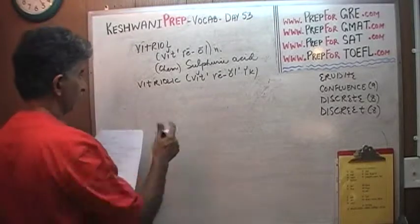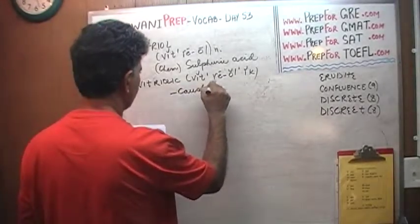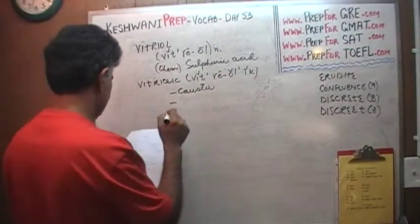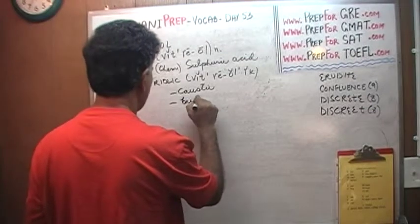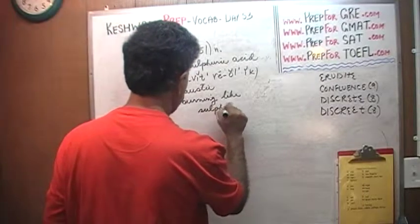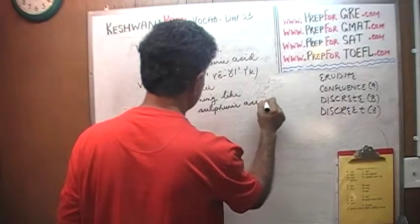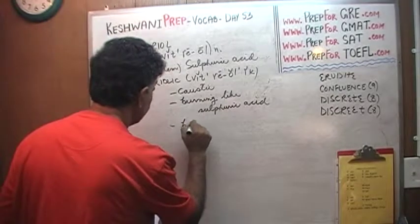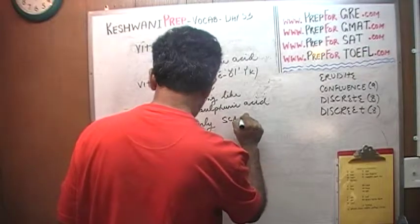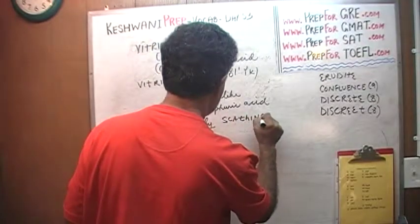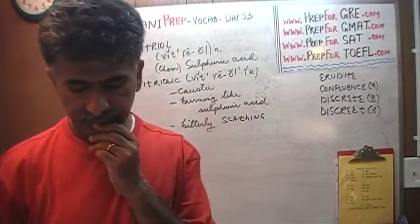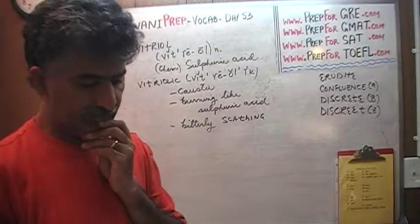Vitriolic means something that is caustic. A caustic comment is vitriolic — it's something that burns like sulfuric acid, something that is bitterly scathing. It really hurts another person's feelings. It's very sarcastic. The word is vitriolic.